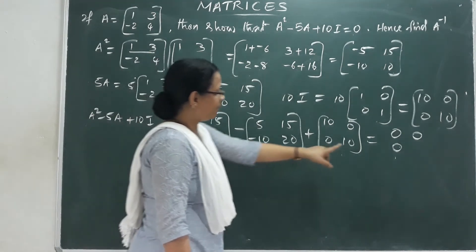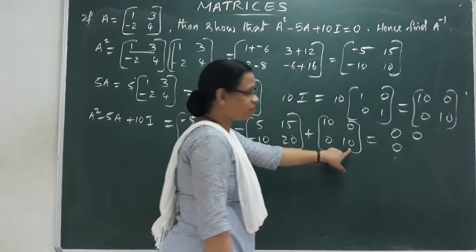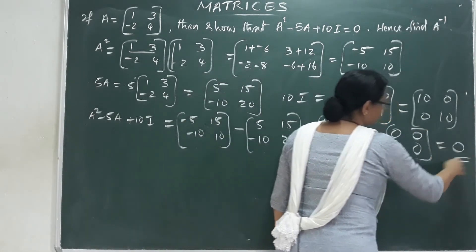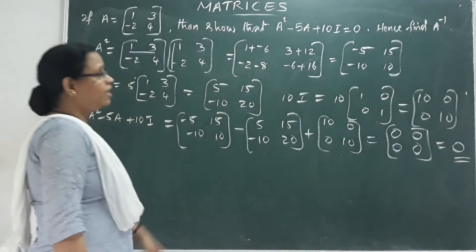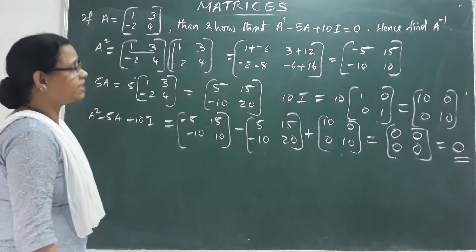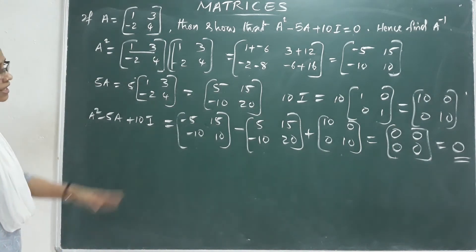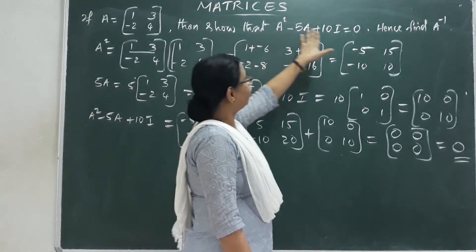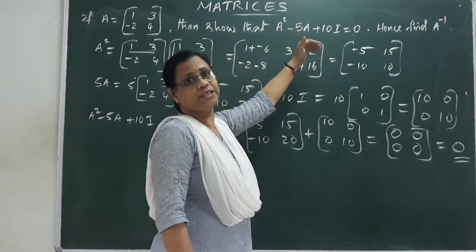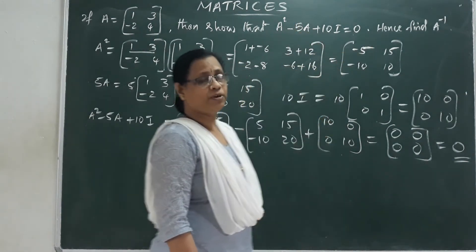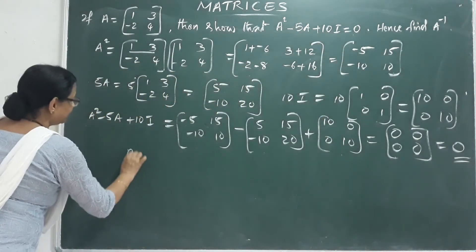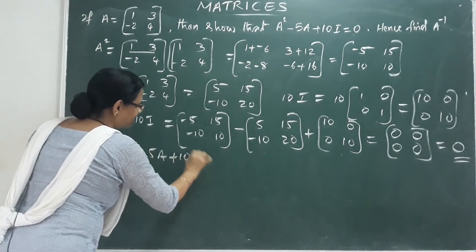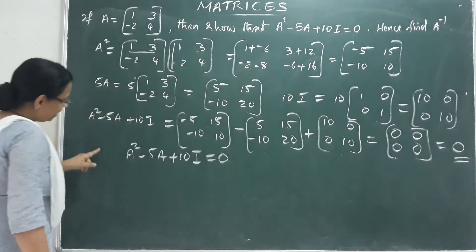Minus 10 plus 10 equals 0. So the result is the zero matrix. Hence we have verified that A squared minus 5A plus 10I equals zero, which is equal to the zero matrix. Proved.